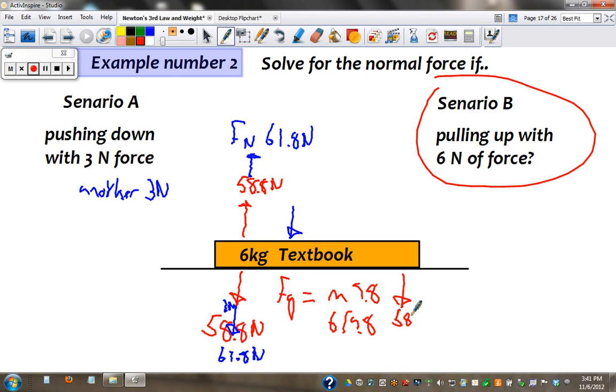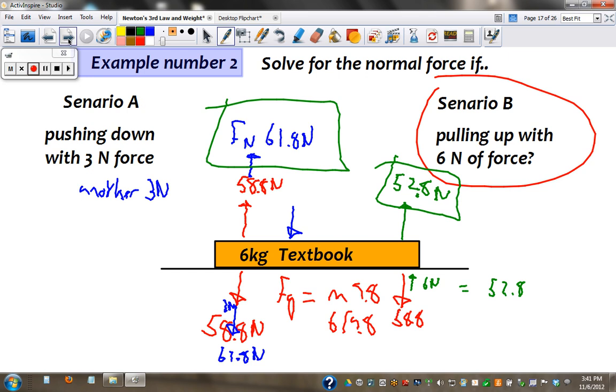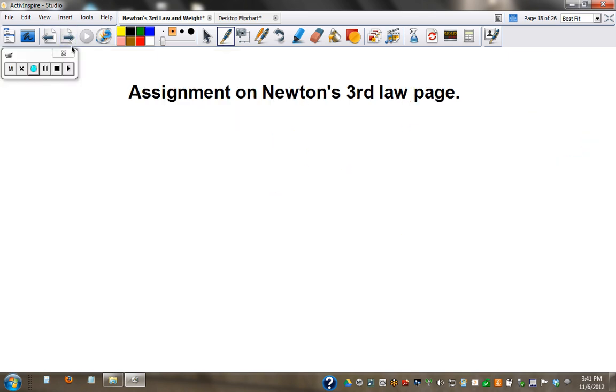Now the opposite is true if I'm lifting up. Normally it's 58.8, but I'm lifting up a little bit, which makes it feel lighter. Makes it feel like it's only 52.8, which means the reaction force if I'm pulling up would be 52.8. So the table thinks it's lighter when I'm pulling up or heavier if I'm adding force to it and making it feel heavy.